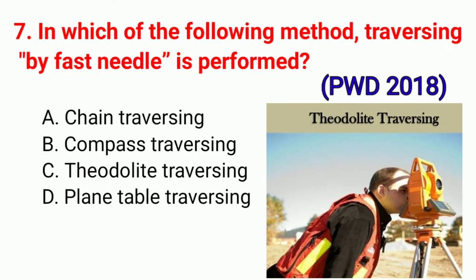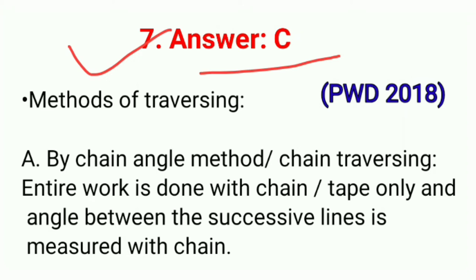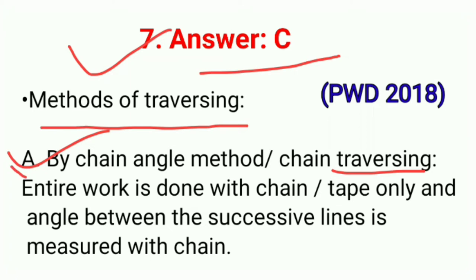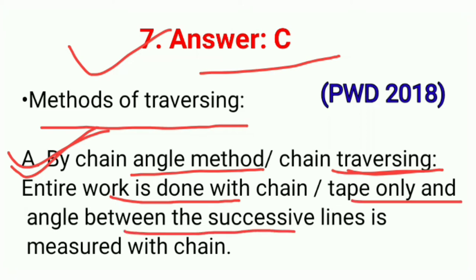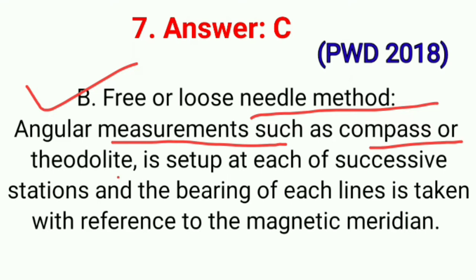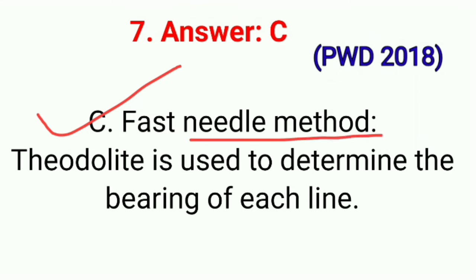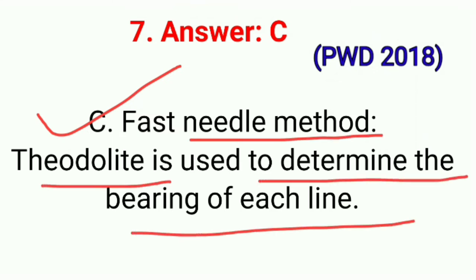Question No. 7. In which of the following methods is traversing by fast needle performed? Correct option C: Theodolite traversing. There are three methods of traversing: first, by chain angle method or chain traversing — entire work is done with chain and tape only, angle between successive lines is measured with chain; second, free and loose needle method — angular measurement such as a compass or theodolite is set up at each successive station and the bearing of each line is taken with reference to the magnetic meridian; third, fast needle method — theodolite is used to determine the bearing of each line. Correct option C.